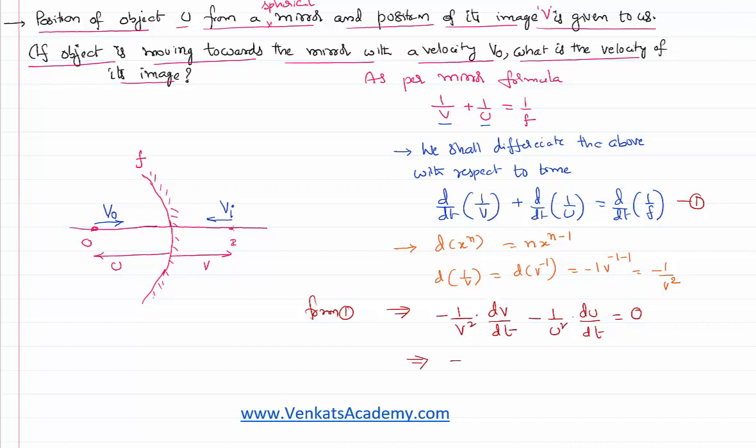That implies minus 1/v² times the change in the position of the image with respect to time (which is v_i) minus 1/u² times the change in the position of the object with respect to time (which is v_o) equals 0.